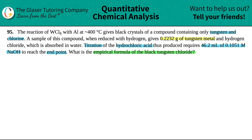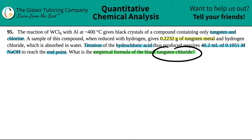Great question. Let's do it. There's a lot of stuff here, but we just have to break it down into its little parts and put the pieces together. The bigger picture is: what's the empirical formula of the black tungsten chloride? This is the compound that we're looking for.